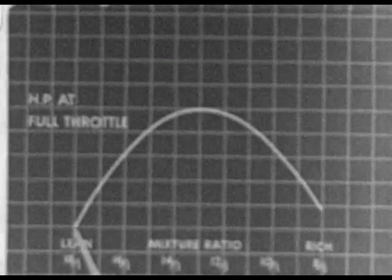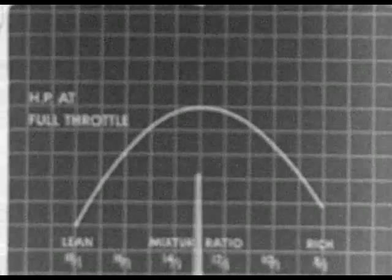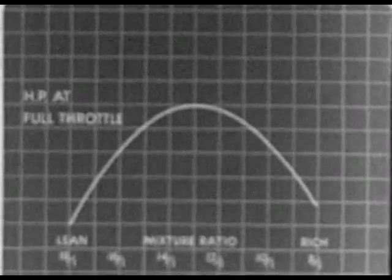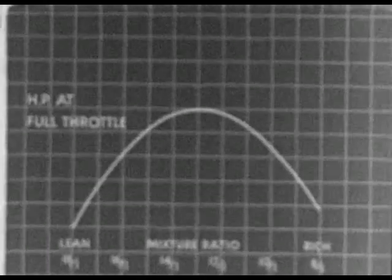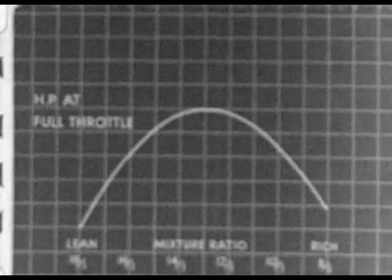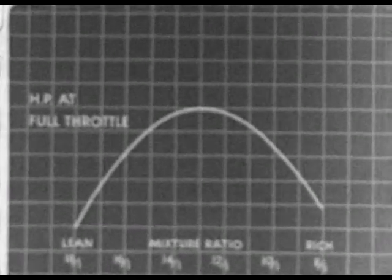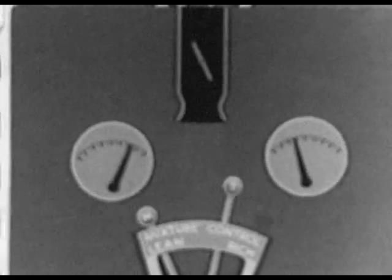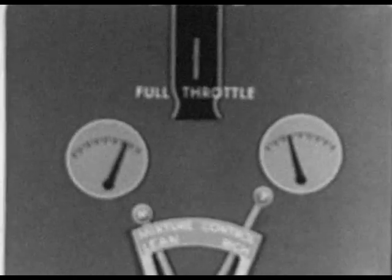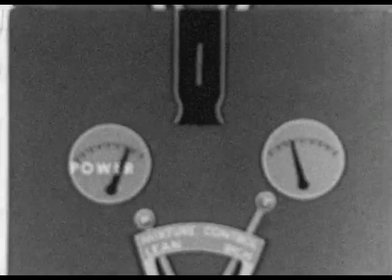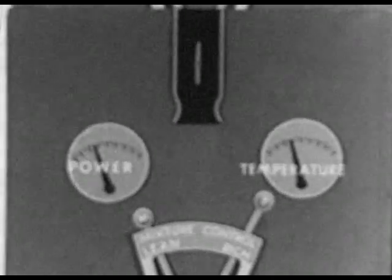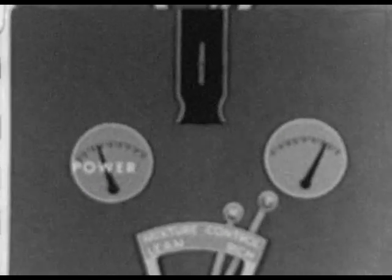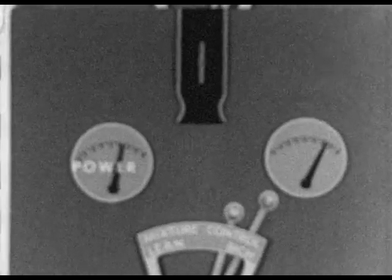This graph shows how horsepower varies with the mixture, the left of the curve representing the leanest mixture which will burn. Maximum power is obtained with a mixture of 12 to 14 parts of air to one of fuel; further increase in richness results in dropping off of power. With too lean a mixture at full throttle, cylinder temperatures run exceedingly high and cooling systems may be inadequate. With a mixture rich enough to consume all the oxygen, more power is obtained and cylinder temperatures run cooler.